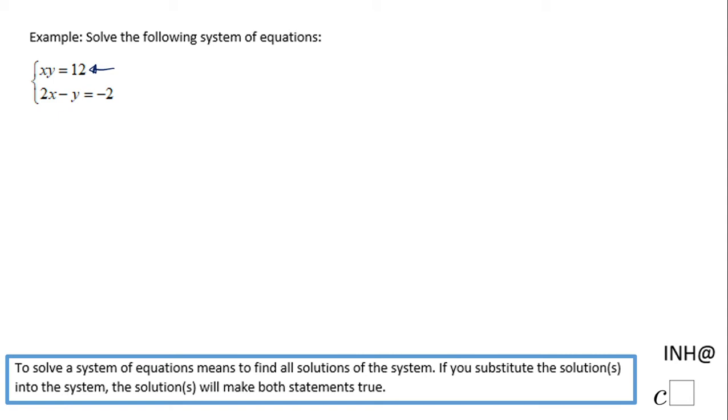That's the reason I'm going to call it a system of nonlinear equations. How do we solve this system of nonlinear equations? We're going to have to solve for y in the second equation, 2x minus y equals negative 2.